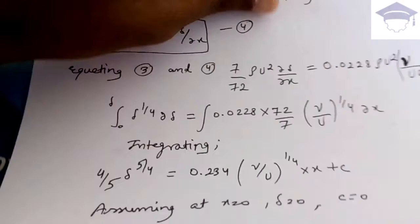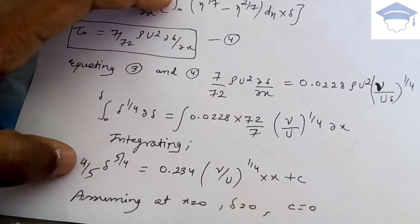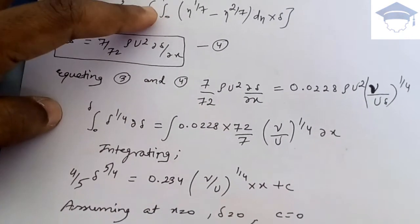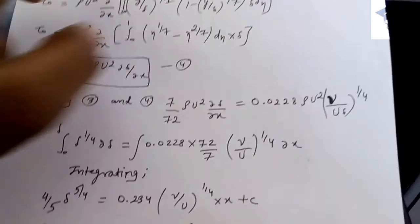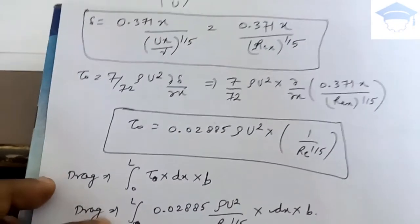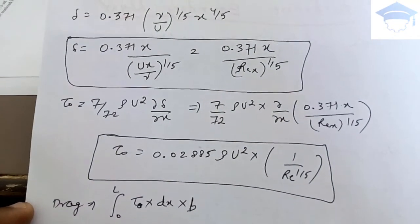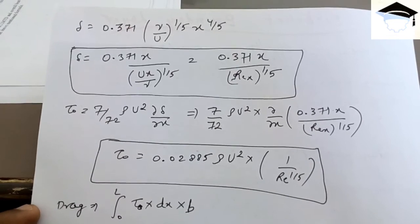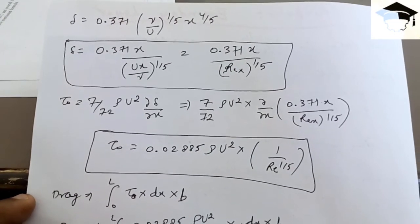The shear stress is given by τ₀ = (7/72) ρU² dδ/dx. Substituting the expression for δ and finding dδ/dx, we finally get τ₀ = 0.02885 ρU² / Re^(1/5).